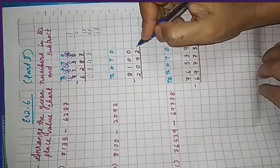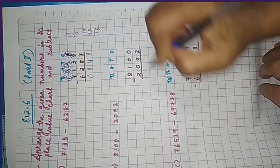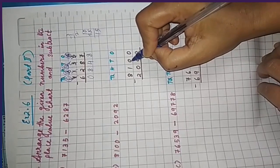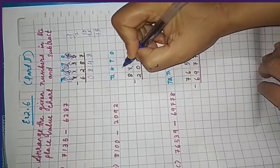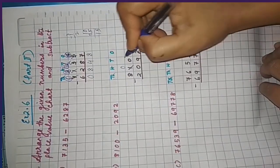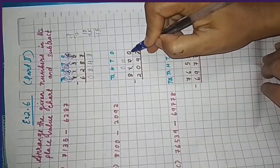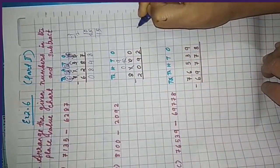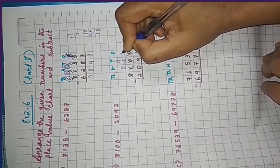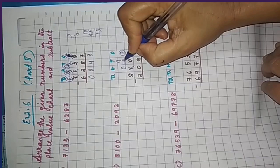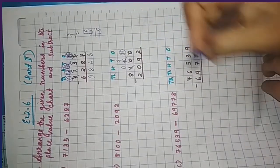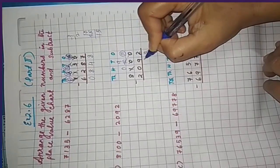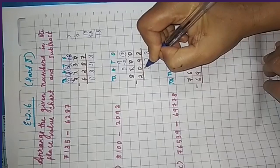0 minus 2 is not possible. When 0 tries to borrow, that place also has 0 — no value — so this 0 borrows from further left. In place of 1 hundred write 0, and 10 comes to the tens place. Now this 0 ones can borrow from the 10 tens: 10 minus 1 is 9, and 1 ten comes here as 10 ones. So 10 minus 2 is 8, 9 minus 9 is 0, 0 minus 0 is 0, and 8 minus 2 is 6. The answer is 6008.